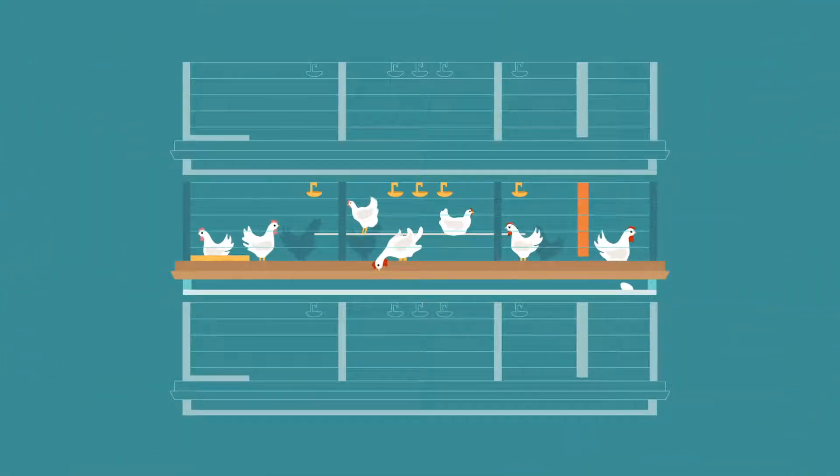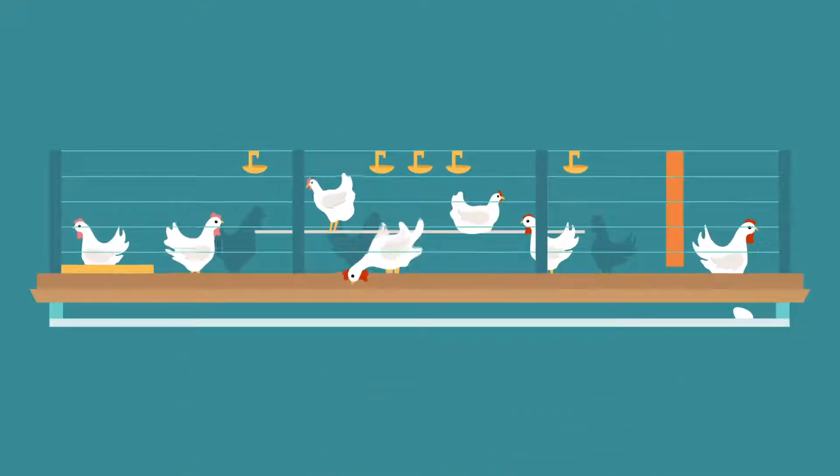Enriched housing is a different style of multi-tiered cage housing that has special features. These enrichments encourage natural hen behaviors like perching, scratching, dust bathing and nesting.